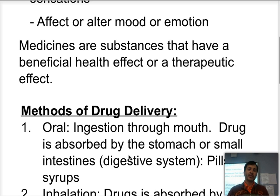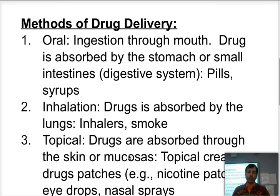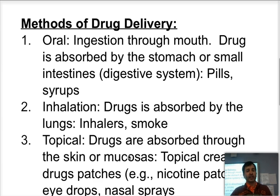There are five general methods of delivery of drugs. First, we could take them orally by ingestion, so they're going to be absorbed through the stomach or digested and absorbed by the gut, by the intestines. We're talking about pills, syrups, capsules, any kind of thing like that.